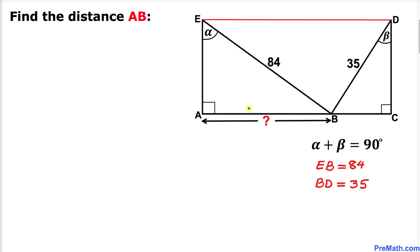Welcome to Pre-Math. In this video lesson we have a rectangle ACDE, such that the sum of two angles alpha and beta is 90 degrees.